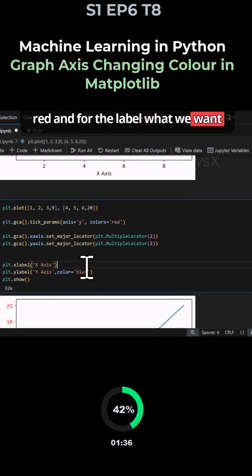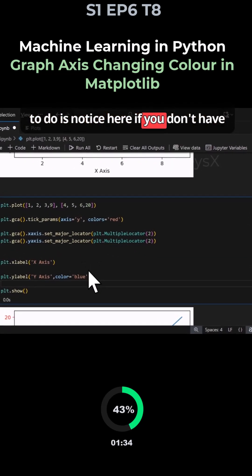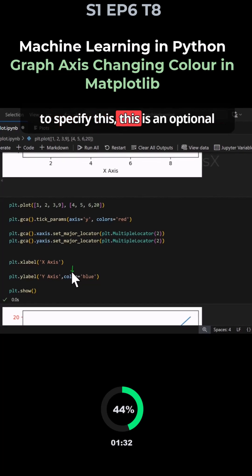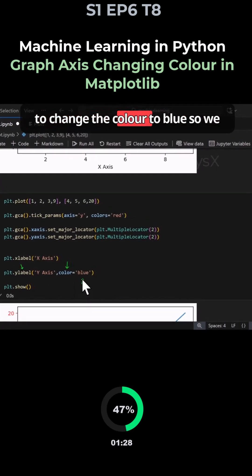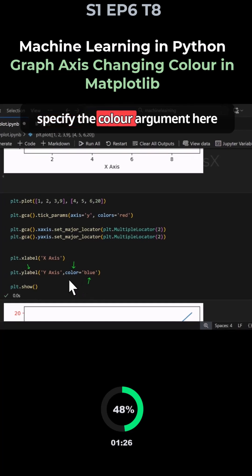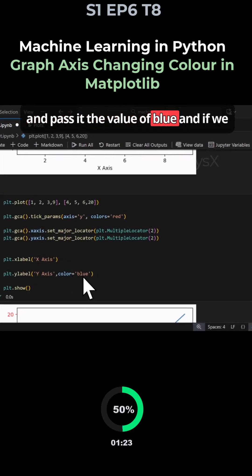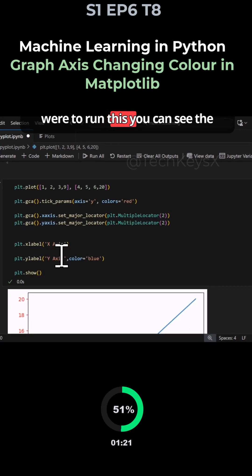For the label, notice here you don't have to specify that this is the optional parameter. For the y-label we want to change the color to blue, so we specify the color argument here and pass it the value of blue.